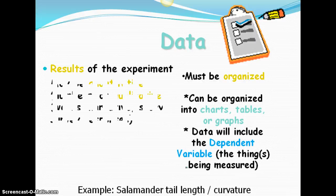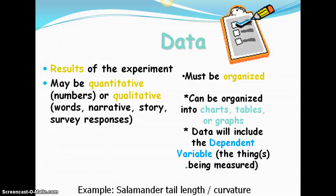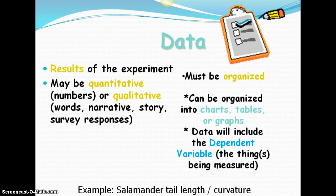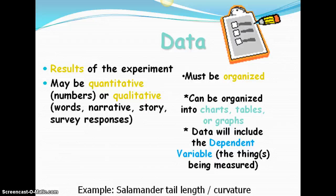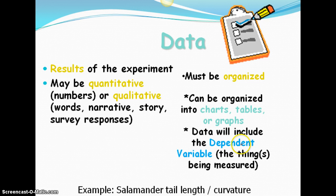So our data, it must be organized. It can be organized into charts, tables, or graphs. And it will show the results of the experiment. There's two kinds of data. It can be quantitative, which is going to give us our numbers. Or it can be qualitative. And that's going to include things like a narrative or a story or survey responses often are qualitative. So if you're asking someone how they felt during an experiment, they're going to describe those feelings. They might have given you some numbers in some of their survey. But the part where they actually describe what's happening, that's going to be a qualitative response. In our organization, we are going to show these data tables or graphs or possibly a combination of all those things. And the data is going to include the dependent variable. This is one we'll talk about on another slide as well. But it's the things that are being measured. So in our example, the salamander tail length or curvature is what we are measuring.